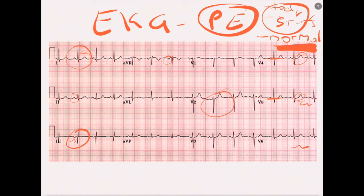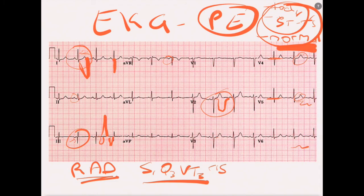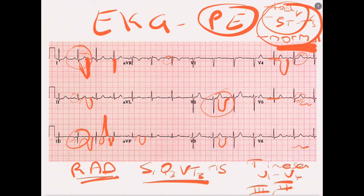So to recap: tachycardia and nonspecific changes are really common. Right axis deviation is common — leads become very positive in the inferior leads and negative in lead one, unlike the normal. The S1Q3T3 pattern: T waves become inverted in lead three, a Q wave appears before the QRS complex, and a big S wave comes down in lead one — but only 15% of people get that. The key finding in right heart strain is T wave inversion in the anterior precordial leads V1 through V4, and also in the inferior leads like lead three and two. Those are the main things to think about with the EKG and PE.